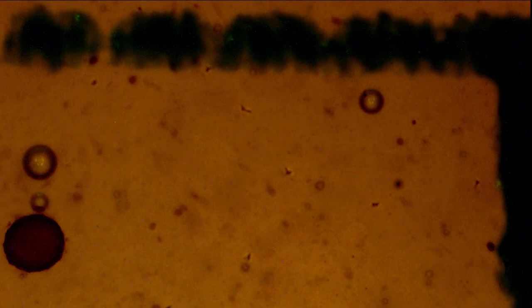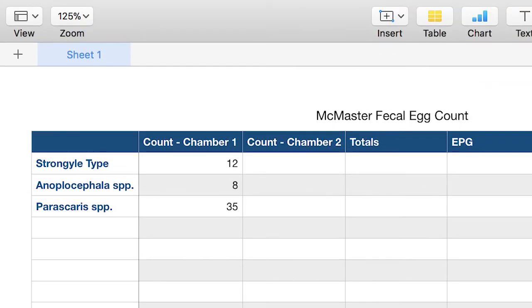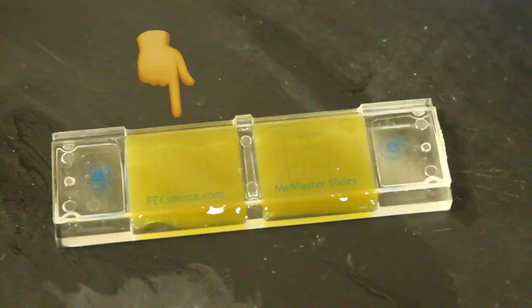Once you have finished one lane on the slide, you will proceed to the next lane and there are a total of six lanes per chamber. Once you have finished those, especially in the beginning, go ahead and write down the number of eggs that you found in that chamber. Next, you'll go over to the other side and count that grid as well.